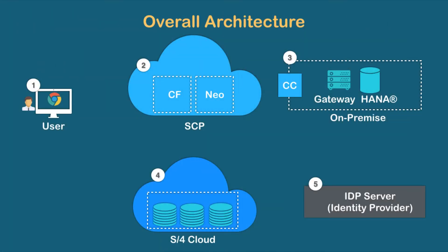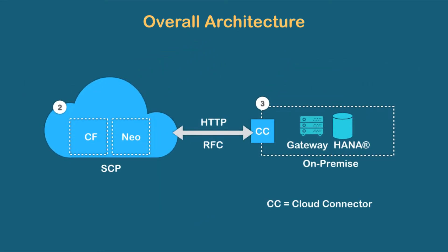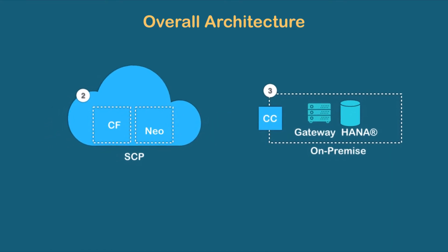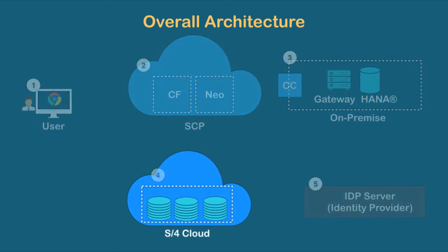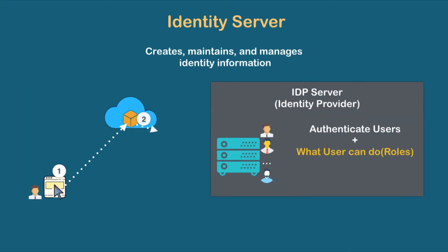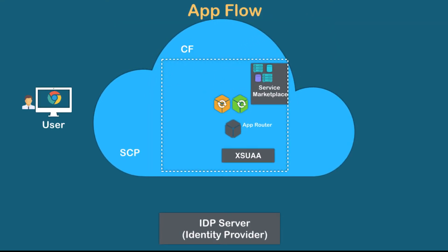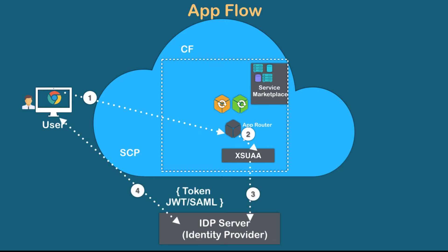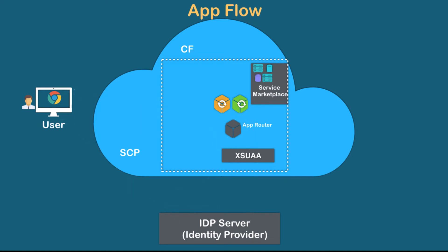Then we will understand the overall architecture for SAP Cloud Platform, and we will see how an on-premise system fits into the equation, how an S/4HANA cloud system fits in, and how the IDP server — the identity provider server — works. Then we are going to go through one use case where we have an application running in Cloud Foundry, and we will learn and understand the inner workings for this application.